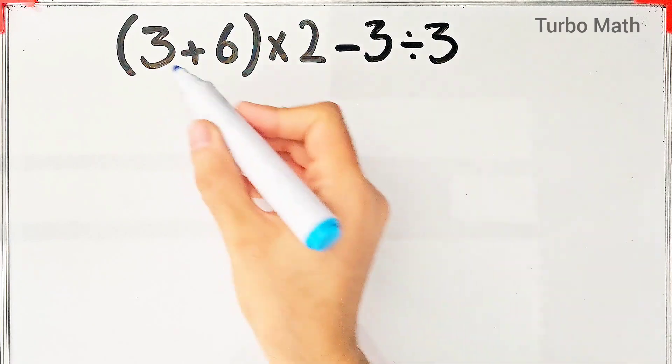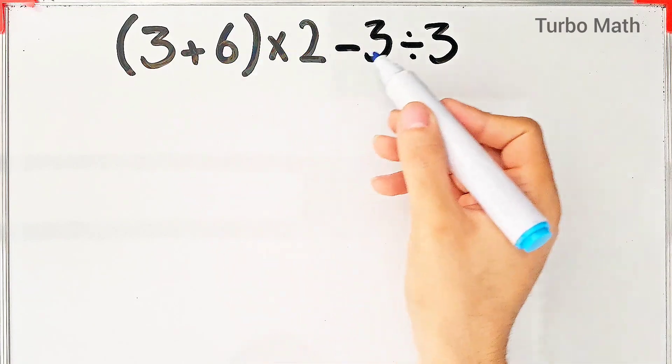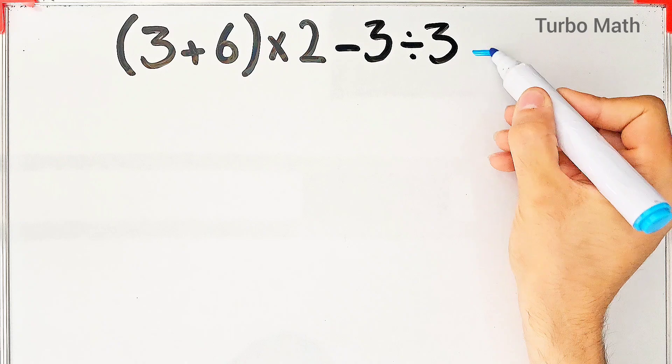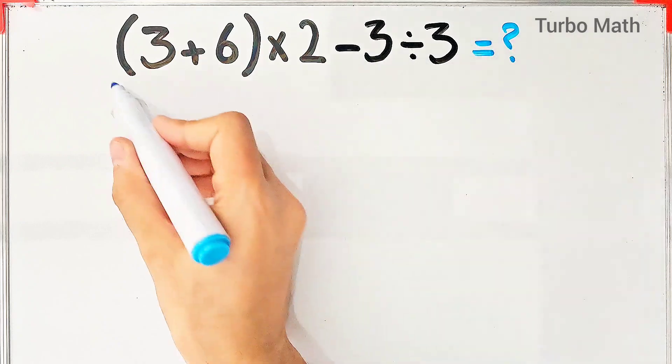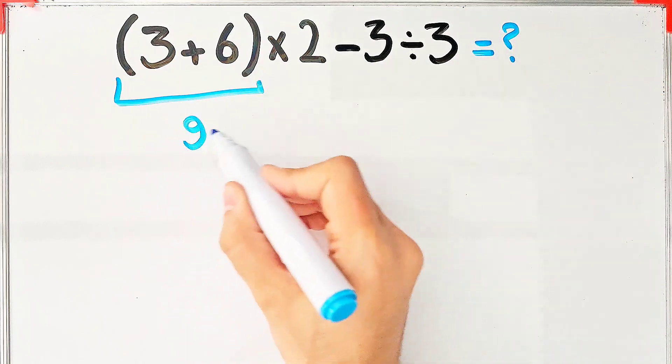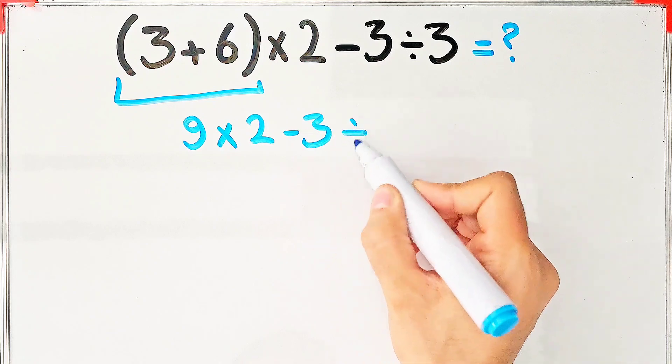What is the answer of this question: (3+6)×2-3÷3? Can you solve this question? 3+6 equals 9, 9×2-3 then divided by 3.